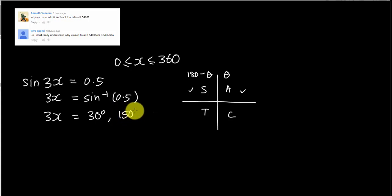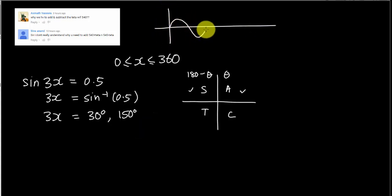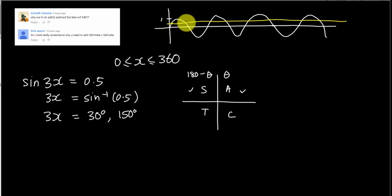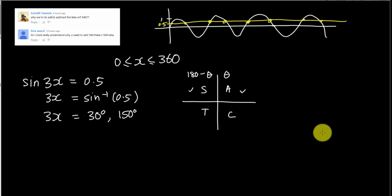However, the sine graph continues until infinity. Its maximum is 1, so if you have 0.5, you will have infinitely many answers — all the intercepts between the sine graph and 0.5. But how do we know where to stop? It's based on the range. The range says your answer cannot be greater than 360, so as long as your final answer is less than 360 you must include it.